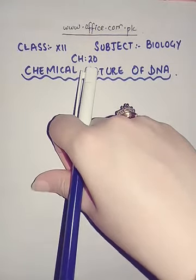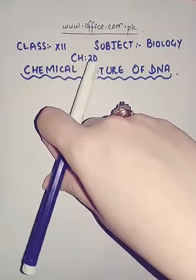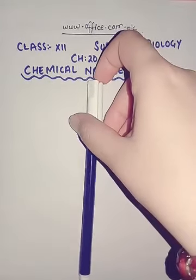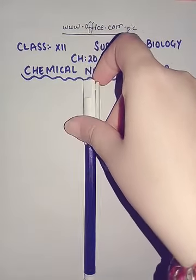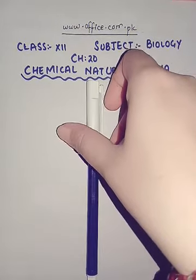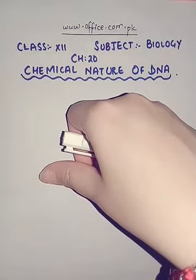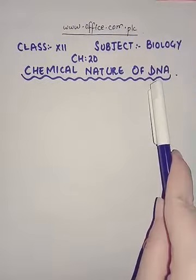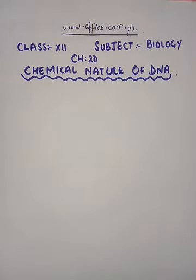Up till now we have discussed chromosomes, their structure, their composition, and different theories associated with the inheriting properties of chromosomes. We have also discussed DNA as a hereditary material. In the previous lecture we proved through various experiments and supportive evidence that DNA is by all means the hereditary material — only DNA has the capability of carrying information from one cell to another, or from one generation to the next. Today we are going to discuss in detail about DNA: its chemical nature, its composition, and the components that determine its specific characteristics and functions.